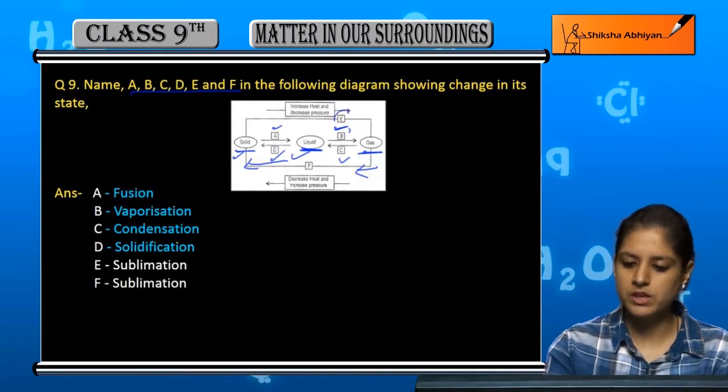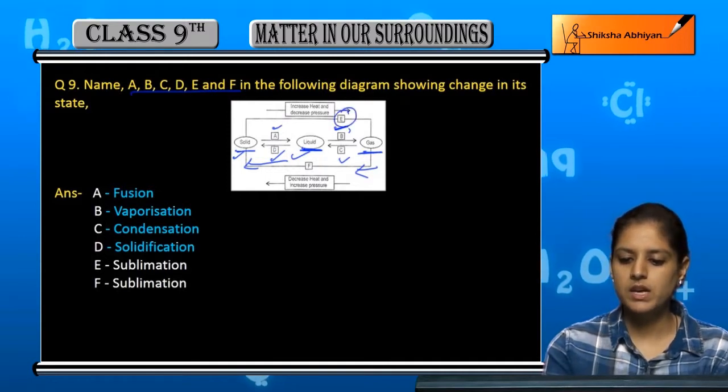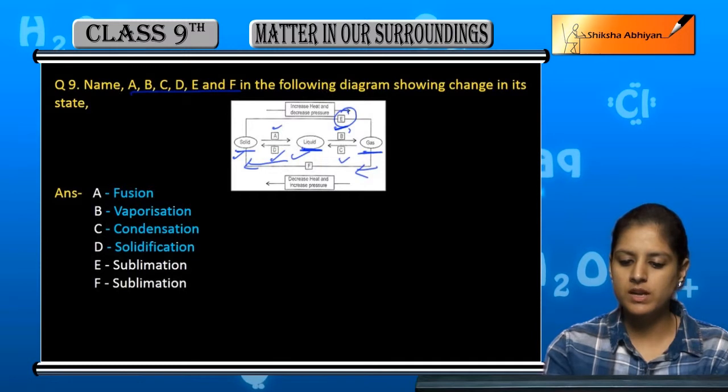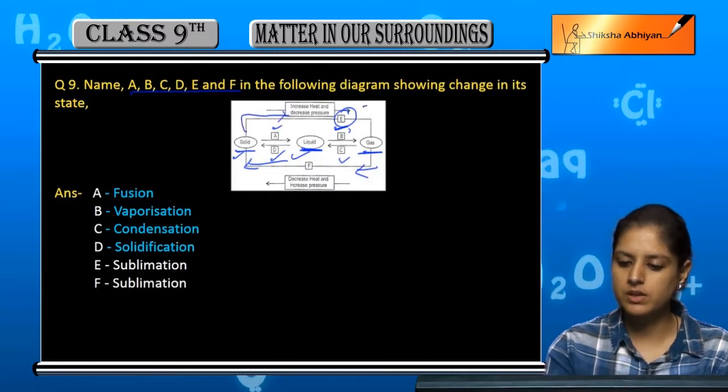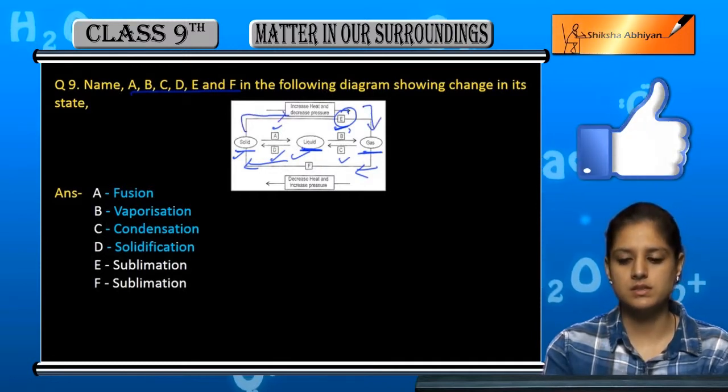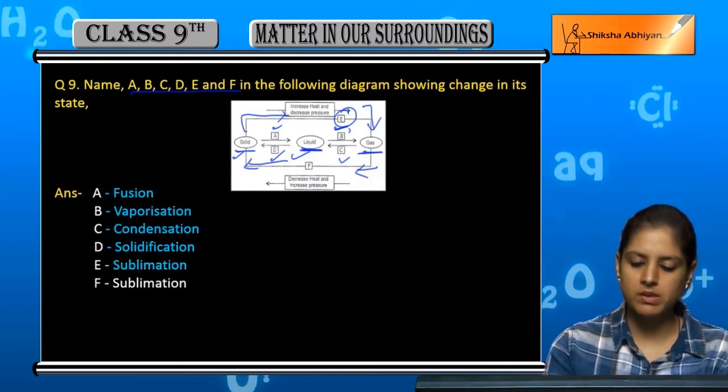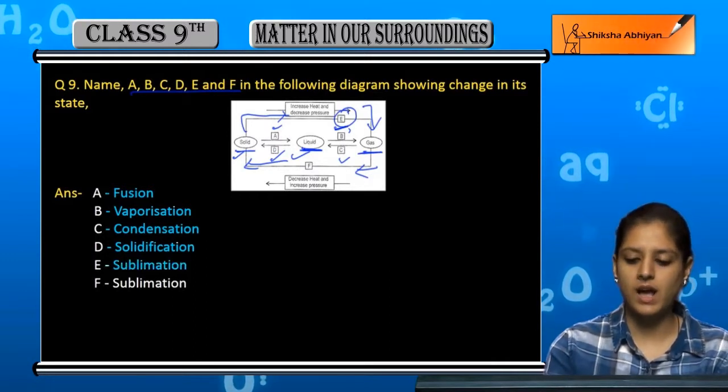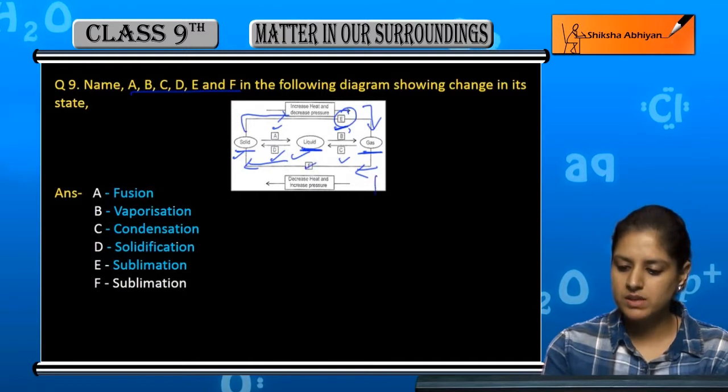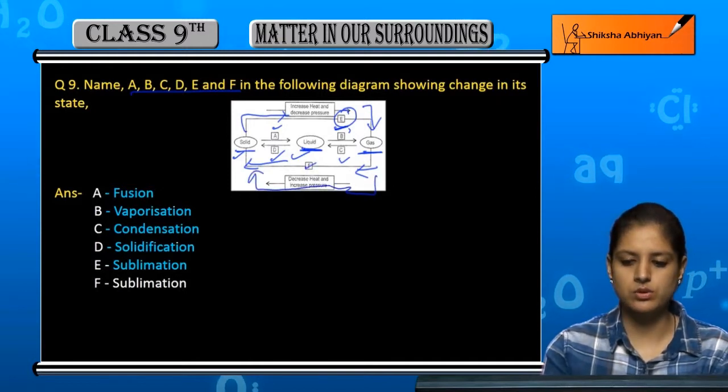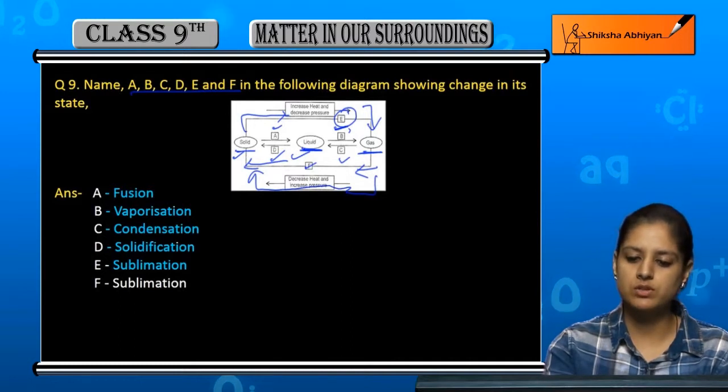Similarly, if we look at E portion, E portion means that it is converting into gas. So solid to gas conversion means sublimation.